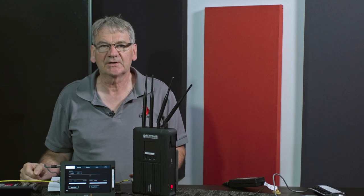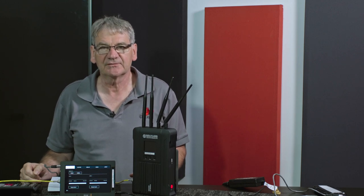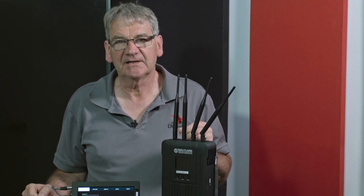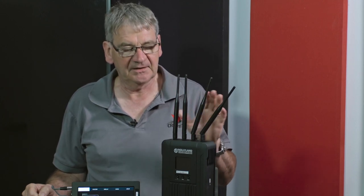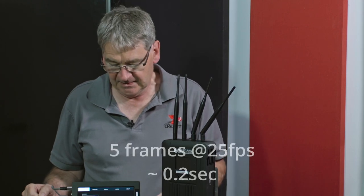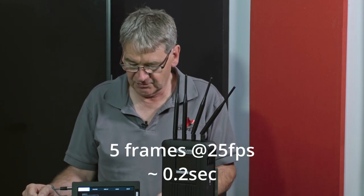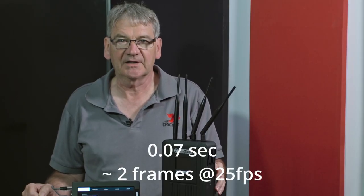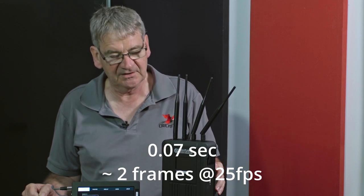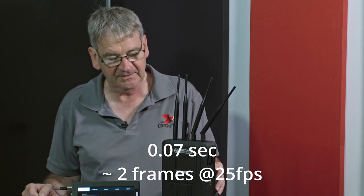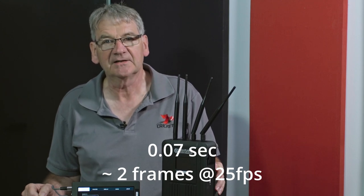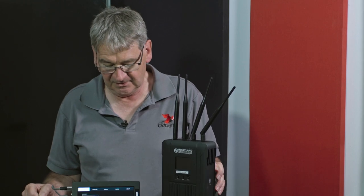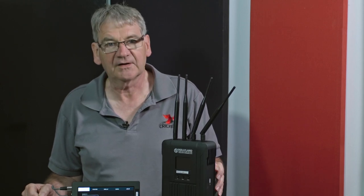To my surprise, there was no difference in delay between the three different picture modes. We measured five frames of delay between real time and the delay time. Now five frames equates to about 0.2 of a second. Holyland say that they have a delay of 0.07 seconds, which equates to about two frames. So we were never able to achieve anything better than five frames, so I just wonder how Holyland get to the very short delay of under two frames.